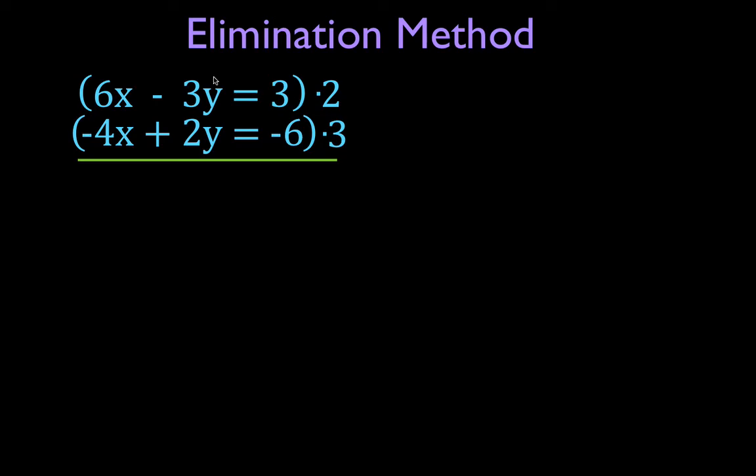So the first one, 6x times 2 is 12, -3y times 2 is -6y, and then 3 times 2 is simply 6. For the bottom equation, -4x times 3, -12x, 2y times 3, 6y, -18 equals -18.